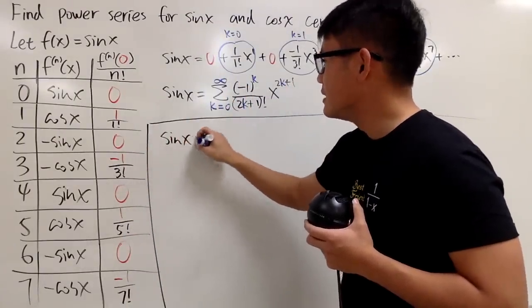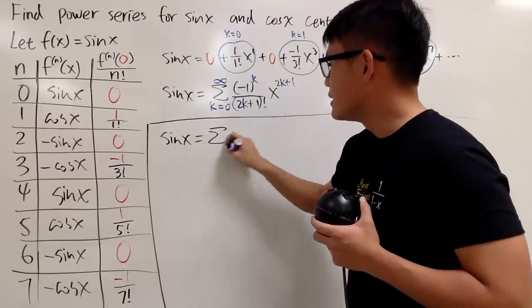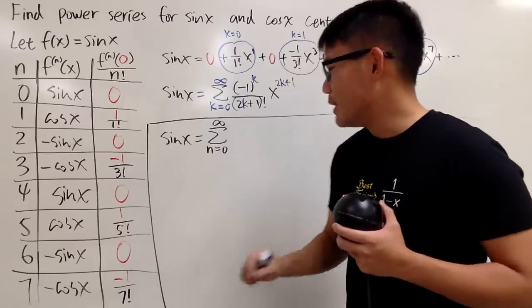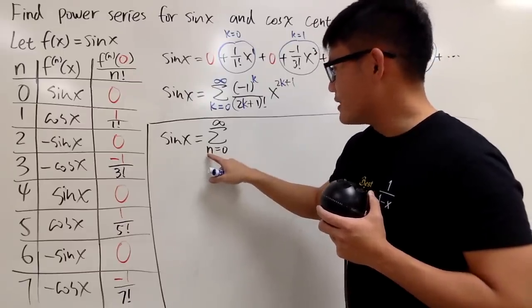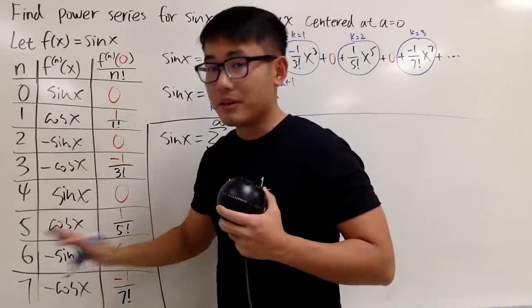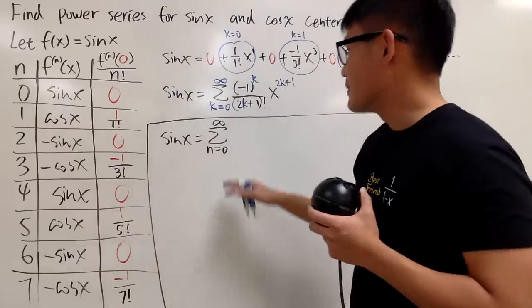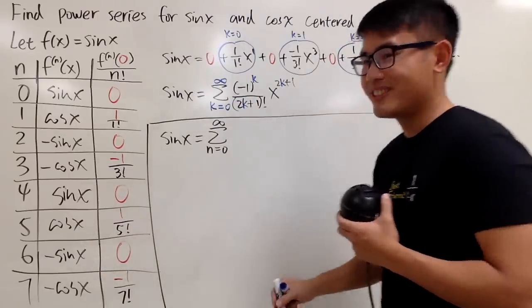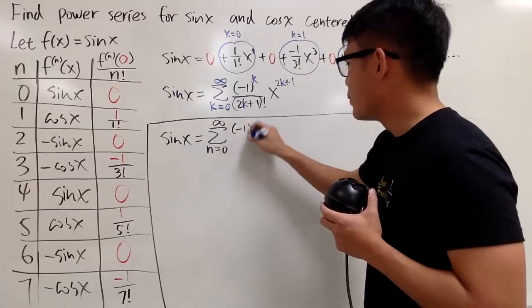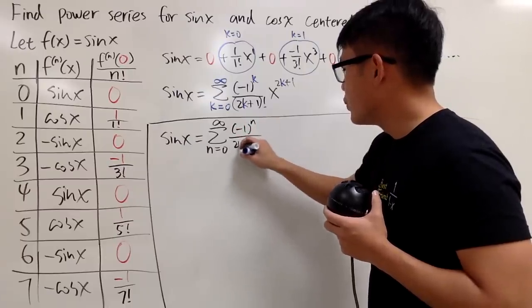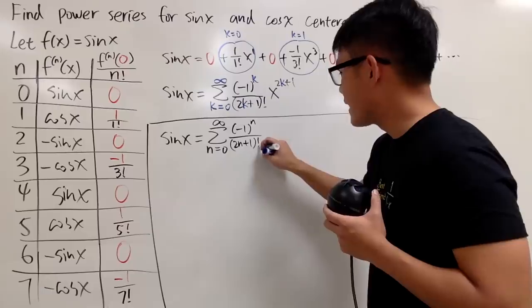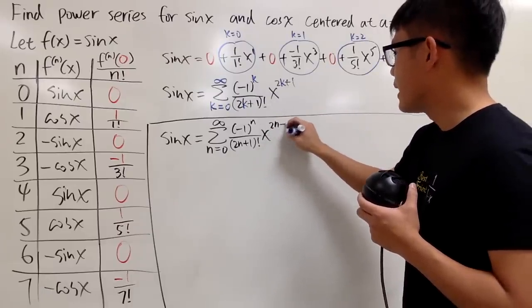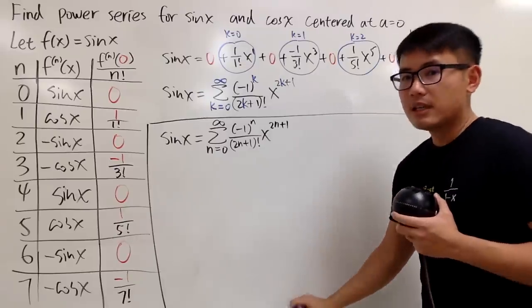We know sin x is equal to the series as n goes from 0 to infinity. You really have to make sure that you know the difference that this n and this n are different. Just a way to re-index, that's all. Don't let the n bother you too much. And then you have negative 1 to the n power over 2n plus 1 factorial, and then x to the 2n plus 1 power.